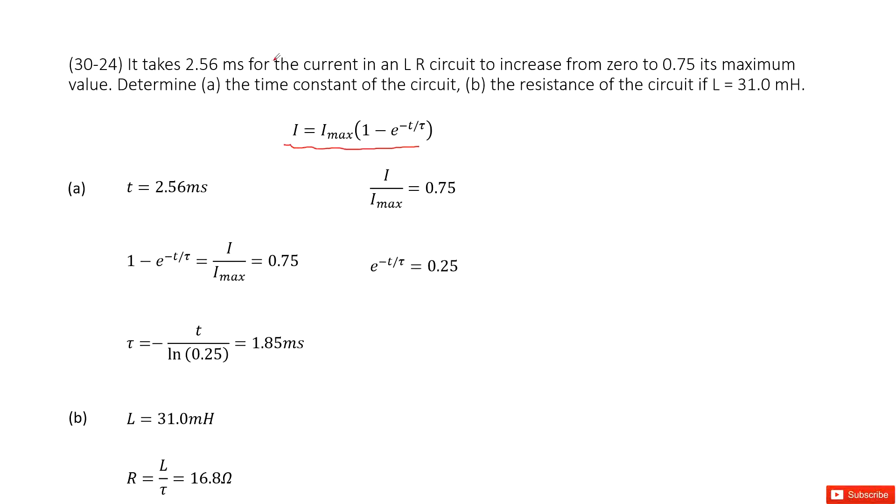Initially, the current I is zero. At the final state, the ratio I over I_max is 0.75.